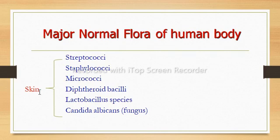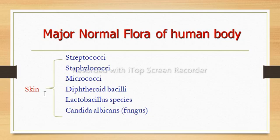The major normal flora of the human body includes skin flora. Skin is the largest organ of the body. The microbes living in or on the skin can be either transient or resident. Most microbes live in the superficial layers of the epidermis as well as the upper part of the dermis. Skin normal flora include Streptococci, Staphylococci, Micrococci, diphtheroid bacilli, Lactobacillus species, and Candida albicans. The largest microbial populations are found in the armpit and groin region, and their habitat depends on conditions such as oily, moist, or dry skin.